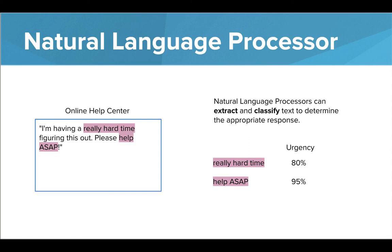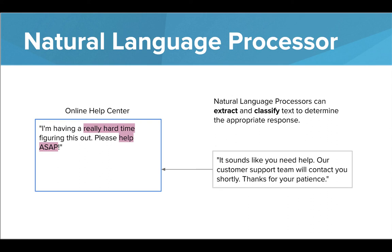In this case, the phrase 'help ASAP' has been given a score of 95%, meaning that it's a very urgent matter. When messages are this urgent, the chatbot has been programmed to reach out to customer support. The chatbot responds indicating that a support person is going to be notified and that they can await a response from a human to address this.